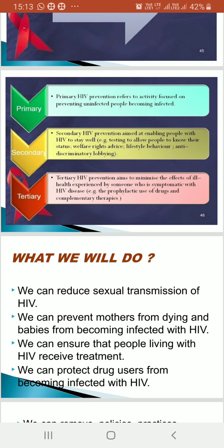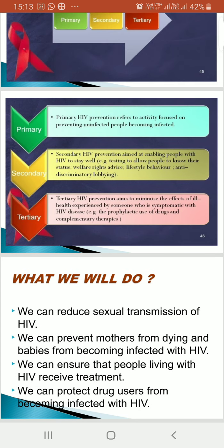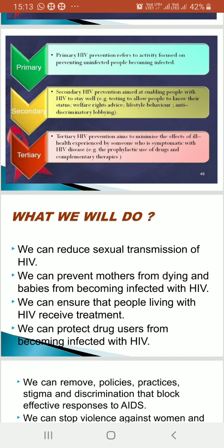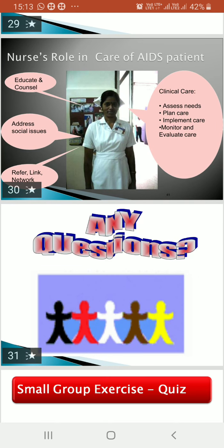Secondary prevention also involves anti-discriminatory lobbying to prevent discrimination against HIV patients. Tertiary prevention aims to minimize the effects of ill health in someone who is symptomatic with HIV disease — through prophylactic use of drugs for prevention, pain management, and complementary therapies for terminally ill patients.